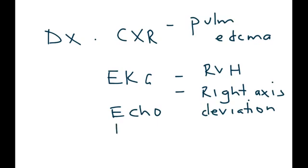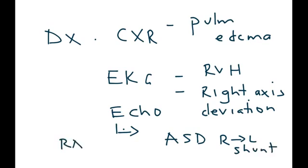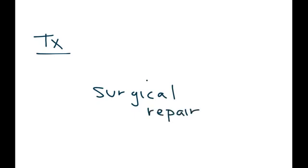The echocardiogram will, of course, show you the ASD, that very important ASD that allows the right to left shunt. And it will also show that the right atrium is enlarged, and it will also show the right ventricular hypertrophy. And finally, the treatment. Essentially, the treatment is a surgical repair of the congenital heart defect.